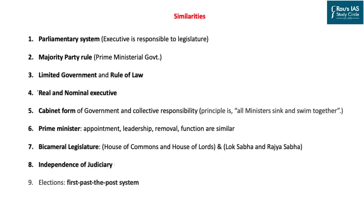The first similarity is that both governments operate under a parliamentary scheme. Parliamentary scheme means there is an organization known as parliament in which the executive is responsible to the legislature. The executive — meaning the cabinet or council of ministers — comes from the legislature and is responsible to it. The legislature is directly responsible to the people of the country, whether in the UK or India. Whenever a member of parliament asks a question to the cabinet, they must be in a position to answer it.